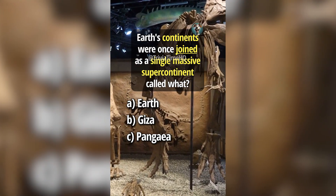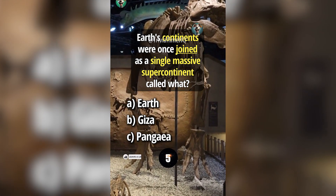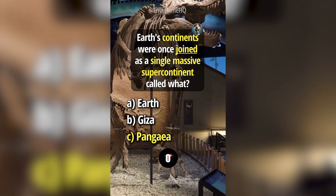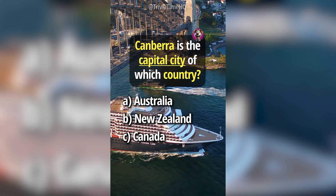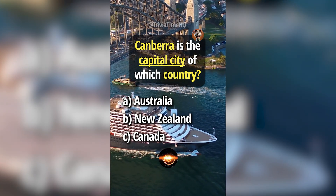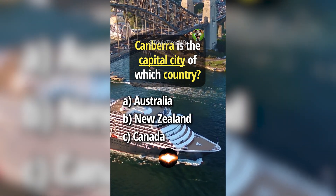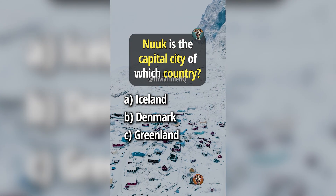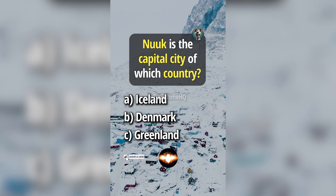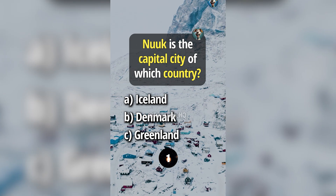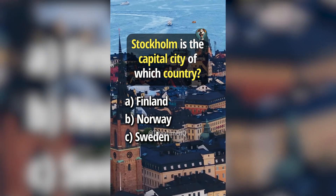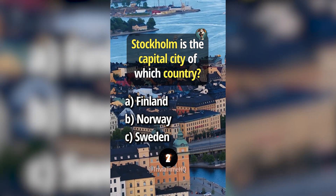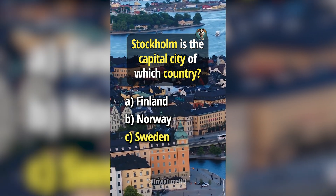Earth's continents were once joined as a single massive supercontinent called what? Answer C, Pangea. Canberra is the capital city of which country? Answer A, Australia. Nuuk is the capital city of which country? Answer C, Greenland. Stockholm is the capital city of which country? Answer C, Sweden.